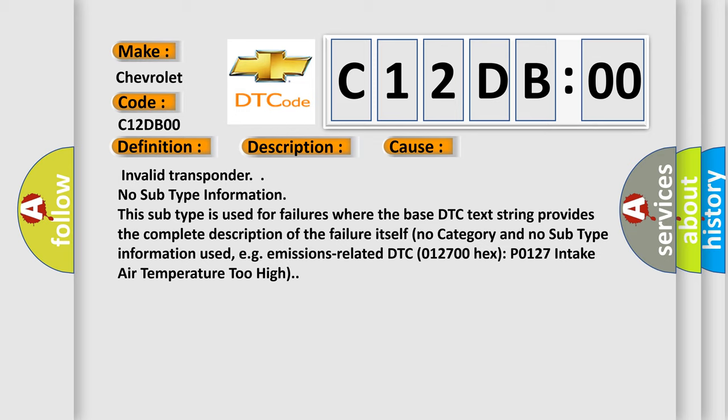No subtype information. This subtype is used for failures where the base DTC text string provides the complete description of the failure itself. No category and no subtype information used, e.g., emissions related DTC 012700 hex P0127 intake air temperature too high.